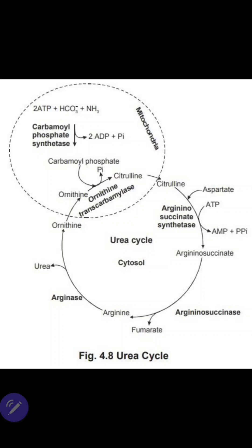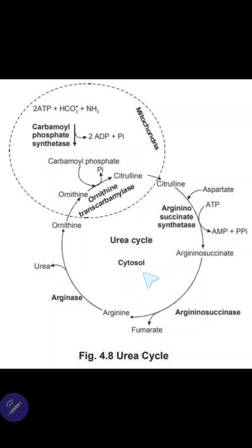Hello everyone, today's topic for biochemistry in just 3 minutes is the urea cycle. The urea cycle is a metabolic reaction where toxic ammonia is converted into non-toxic urea inside the liver. The intracellular site is partially mitochondrial as well as partially cytosolic, just like that of heme synthesis.